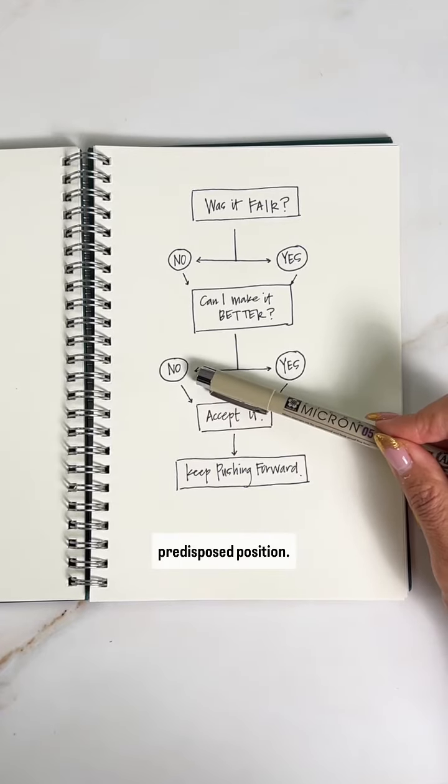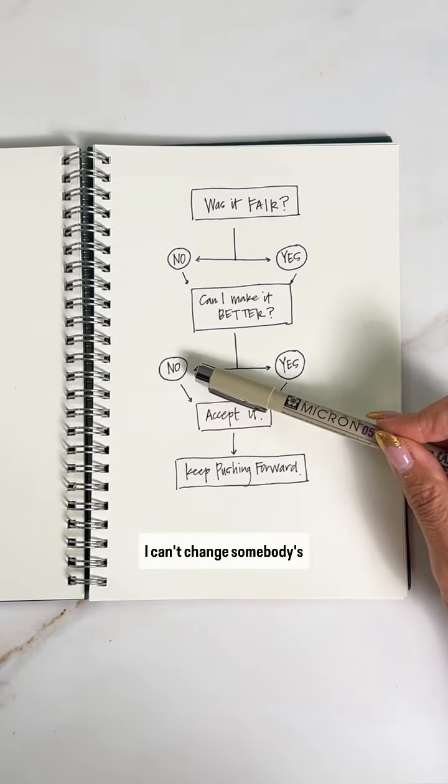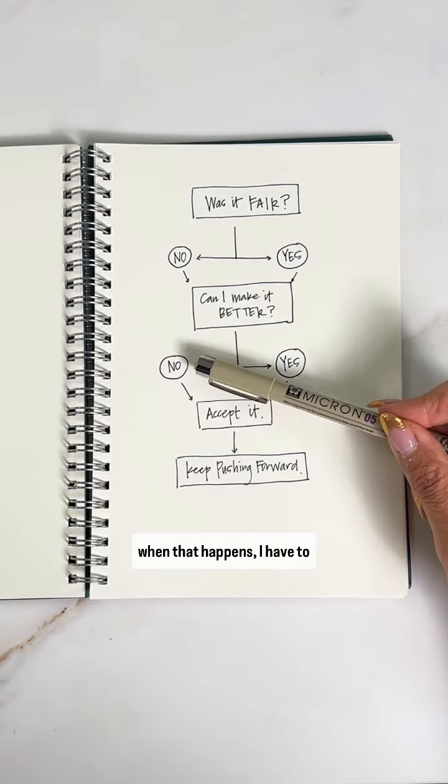I can't change somebody's predisposed position. I can't change some of these preferences. I can't change statistics. And when that happens,